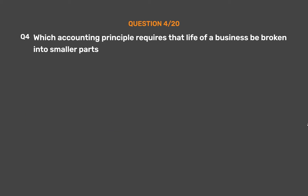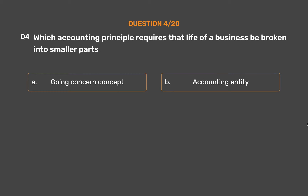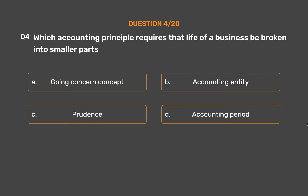Question No. 4: Which accounting principle requires that the life of a business be broken into smaller parts? Option A: Going Concern Concept. Option B: Accounting Entity. Option C: Prudence. Option D: Accounting Period.